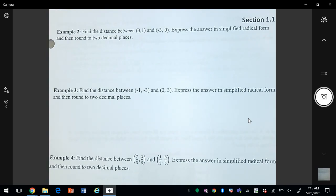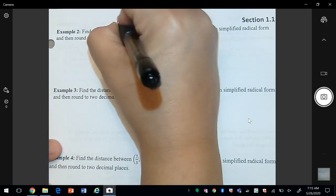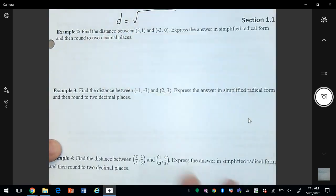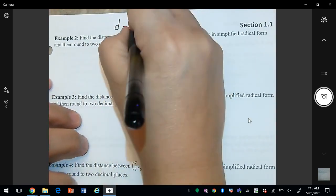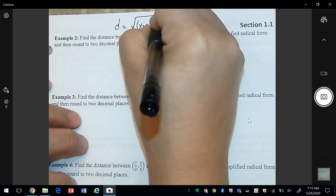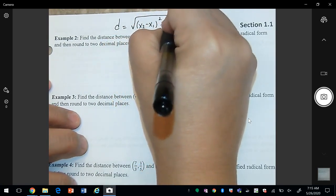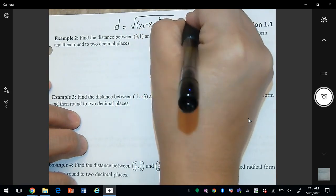Distance between (3, 1) and (-3, 0) expressed in radical form and rounded to two decimals. So first I like to write down the formula somewhere where I can see it. So we have x₂ minus x₁ squared plus y₂ minus y₁ squared.